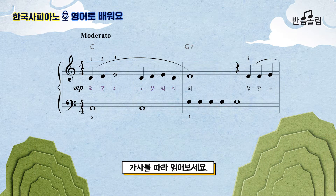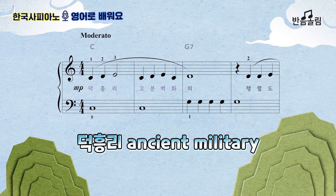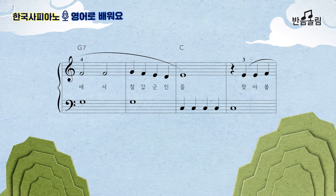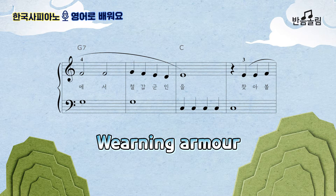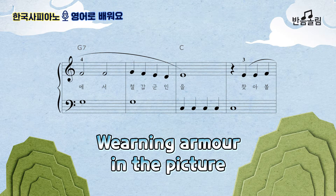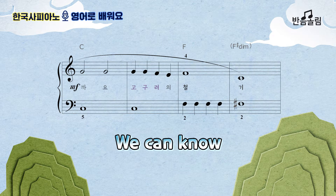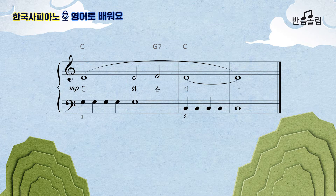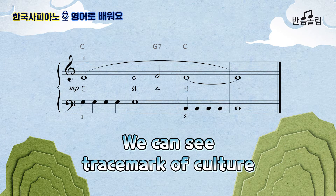Read lyrics slowly after me. Deokheung-ri ancient military parade mural — wearing armor in the picture. We can know the Iron Age of Goguryeo. We can see the trademark of that culture.